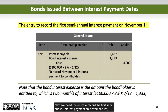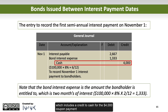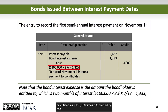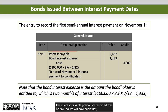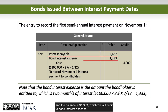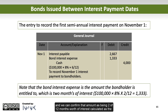Next we need the entry to record the first semi-annual interest payment on November 1, which includes a credit to cash for the $4,000 coupon payment, calculated as $100,000 times 8% divided by 2, and that split between interest payable and interest expense. The interest payable previously recorded was $2,667, so we will now debit that. The balance is $1,333, which we debit to bond interest expense — confirmed as 2 of 12 months worth of interest, calculated as $100,000 times 8% times 2/12.